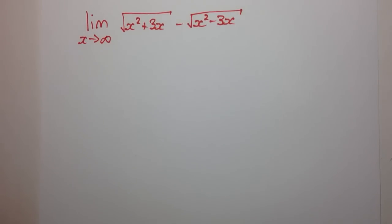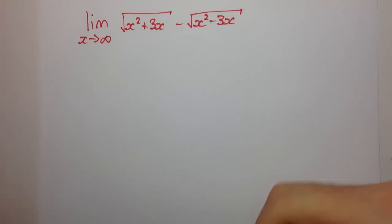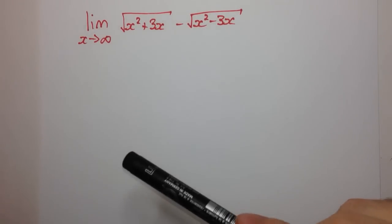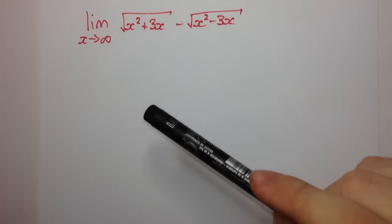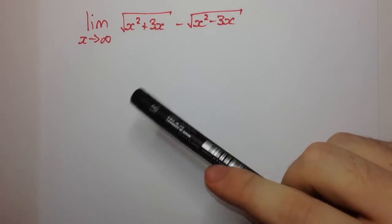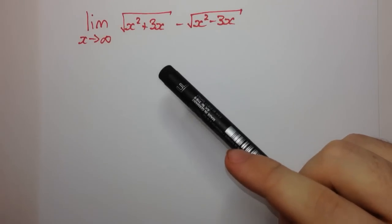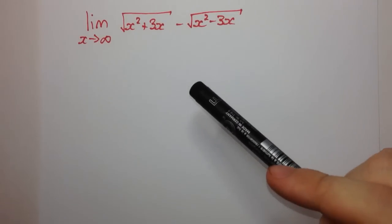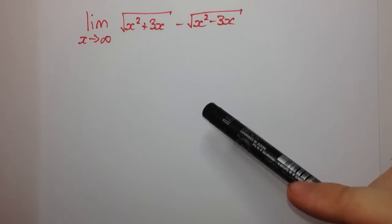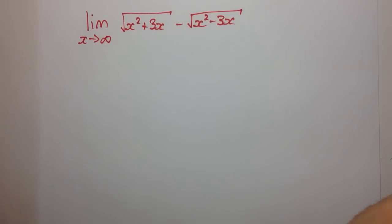Welcome to today's video. In this video we'll be looking at this limit: the limit as x approaches infinity of the square root of x squared plus 3x minus the square root of x squared minus 3x.